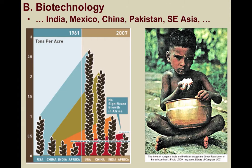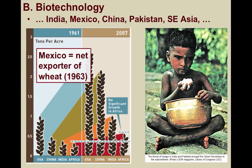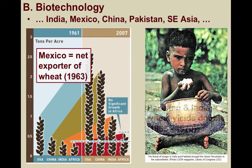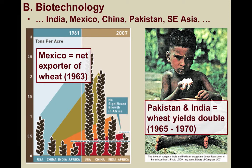The collective use of HYVs, improved irrigation, and chemical farming — labeled as the Green Revolution — was introduced to other countries and regions with dramatic effect, in places such as Mexico, China, Pakistan, and throughout Southeast Asia. For instance, Mexico became a net exporter of wheat by 1963. Between 1965 and 1970, wheat yields nearly doubled in Pakistan and India, greatly improving food security in those nations.